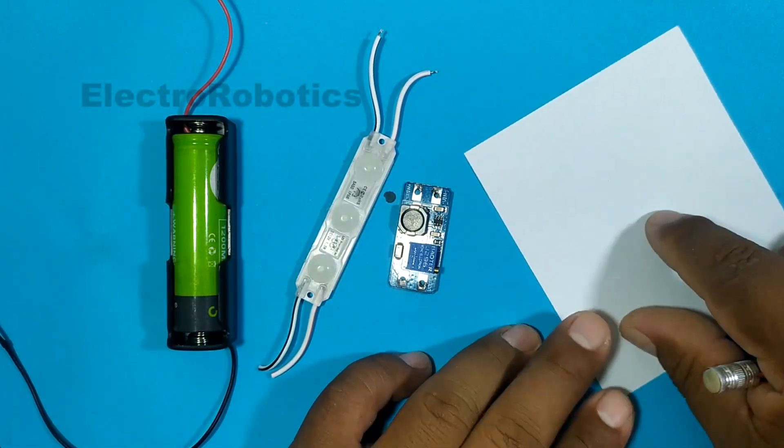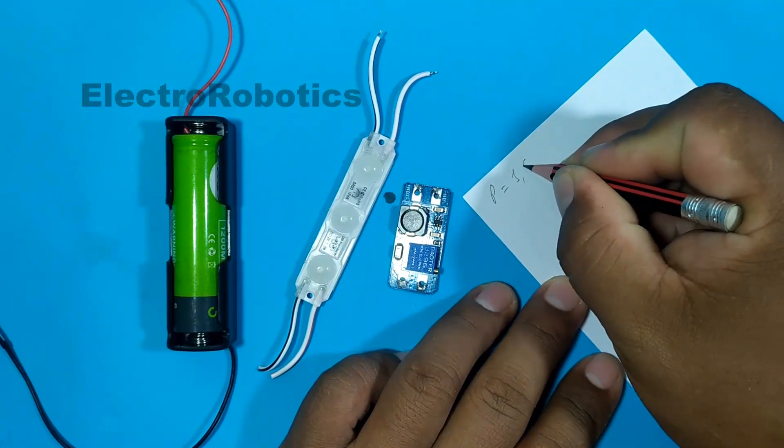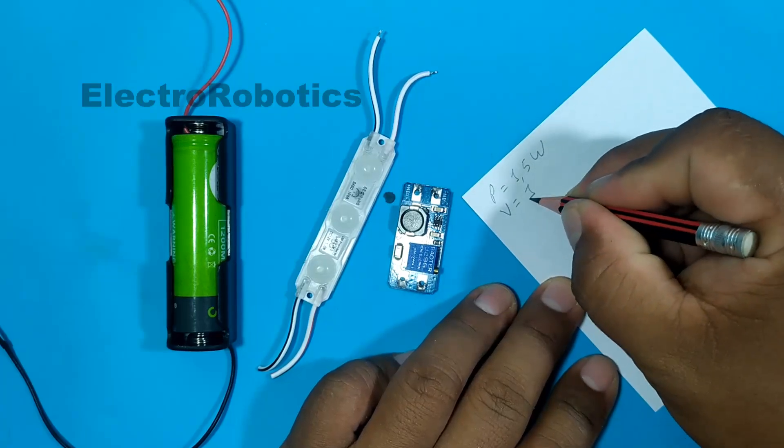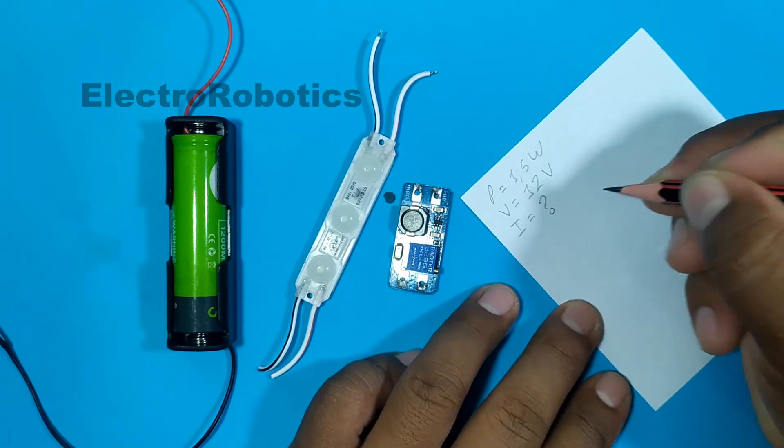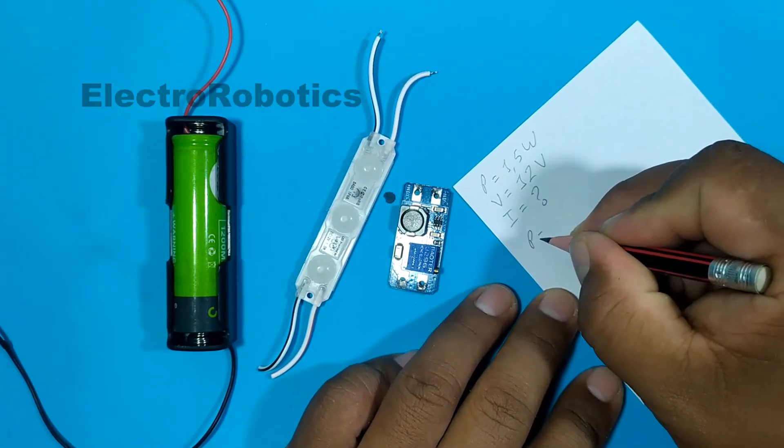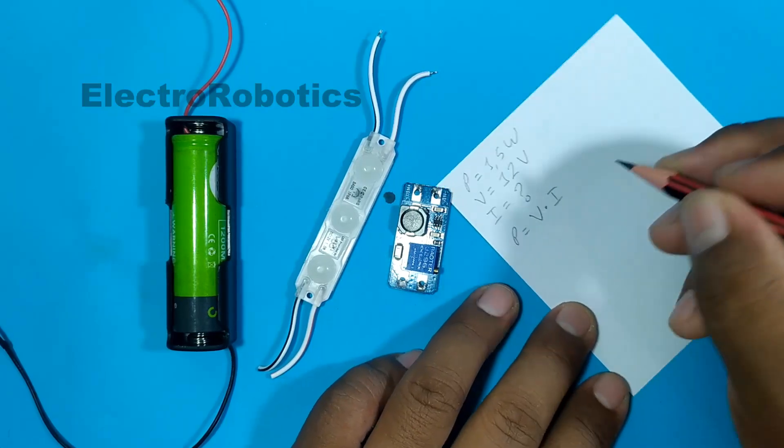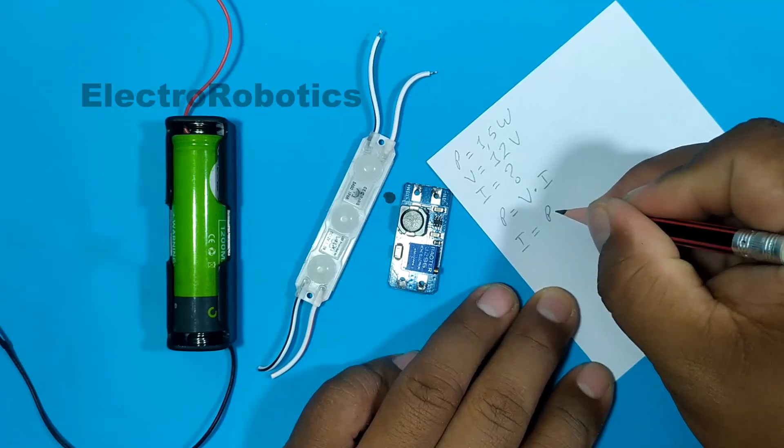Keep in mind that the LED module has a power of 1.5 watts. It works with a voltage of 12 volts. And how much is the current? Well, the power is equal to the voltage times the current. Therefore, the current is going to be equal to power over voltage.